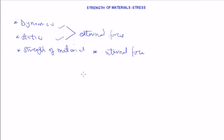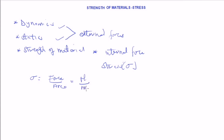Now let's derive some formulas. Stress has a symbol sigma, and stress is equal to force over area, which can also be broken down as Newton over millimeter squared. Stress can also be termed as pressure because it has the same unit as pressure, which is Newton per millimeter squared.